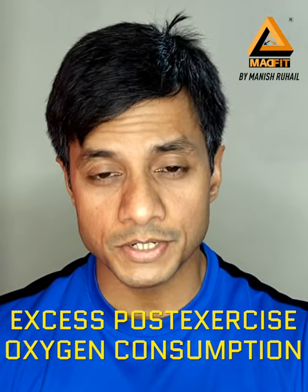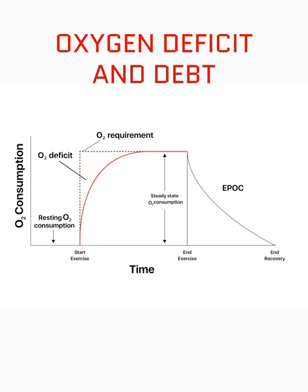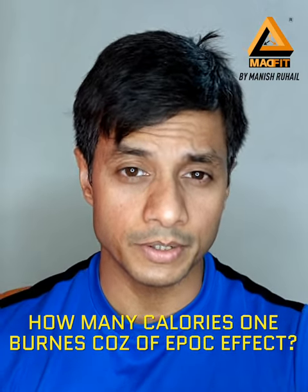To create better understanding, let's understand this concept with the help of a picture. As you can see on the screen, the red part that's blinking reflects the oxygen deficit that was created when the exercise just started. Moving on, the blinking line reflects the steady state that was achieved later. Then the third part, when the exercise ended, is the black line on the screen. After the exercise finished, the green part reflects the elevated levels of oxygen uptake even post-exercise, and this is called excess post-exercise oxygen consumption.